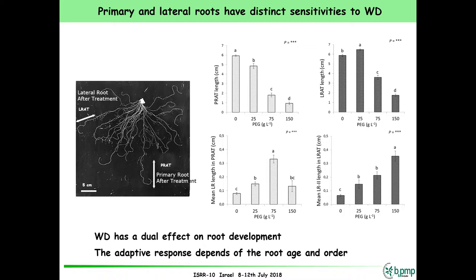We wanted to go further and understand what happened, so we analyzed the root system architecture in more detail. We focused on the part of the root produced during the water deficit treatment. By comparing images of the root system before and after treatment, we can track where the primary root was. When we start the treatment, at high magnification, you can clearly see a change in root shape that is used to track the newly formed part.